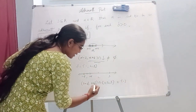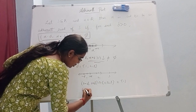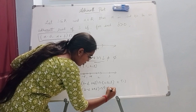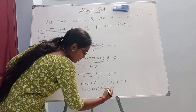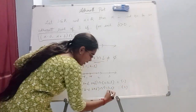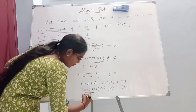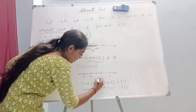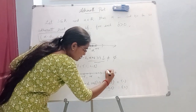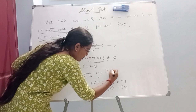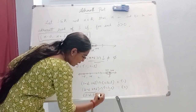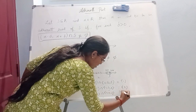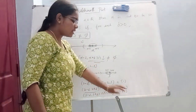Now let's check 2. The neighborhood is (2 minus delta, 2 plus delta) intersect with {1, 2, 3}. The common value is 2. Now let's check 3. So (3 minus delta, 3 plus delta) intersect with {1, 2, 3} — the answer is 3. Only common value is 3.